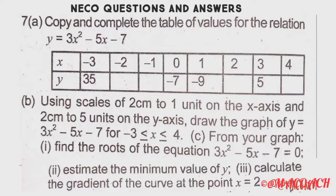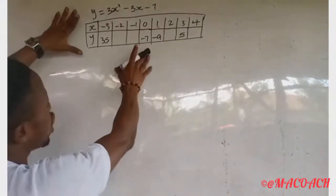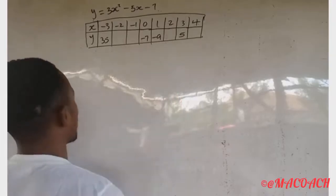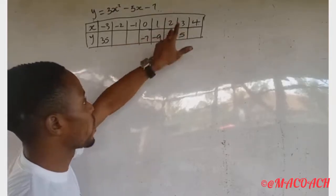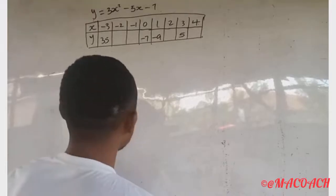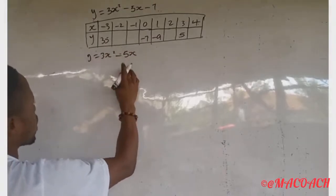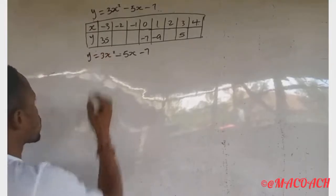This is our first question for this exam. The question says: copy and complete the table. Some values of y are already given — 35, minus seven, minus nine, and five. We need to find the missing values of y when s equals minus one, and when s equals two. The formula given to find y is: y equals three s squared minus five s minus seven.